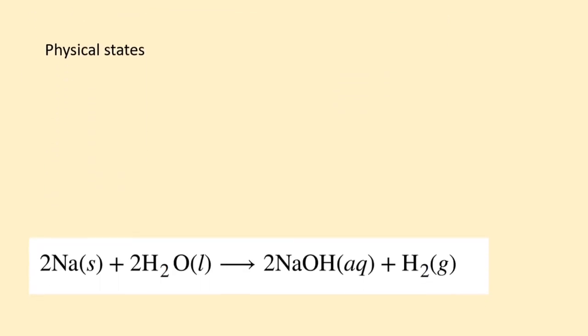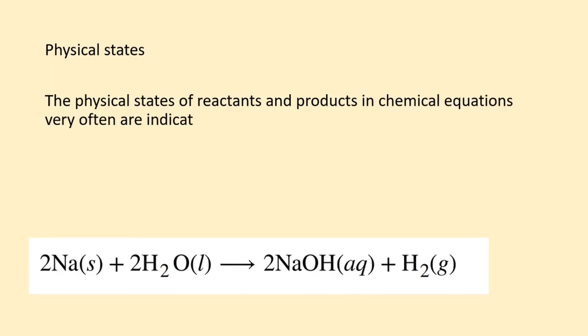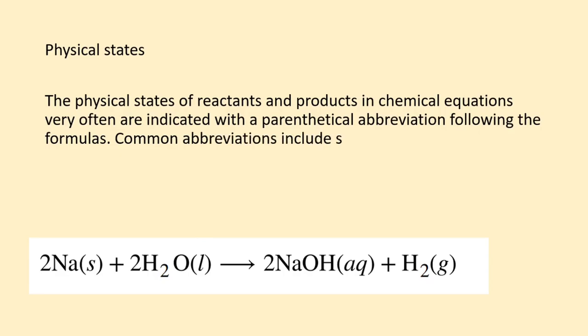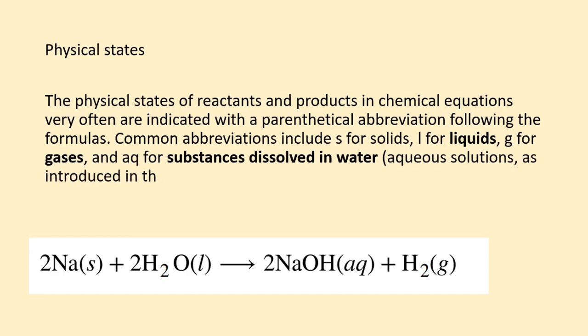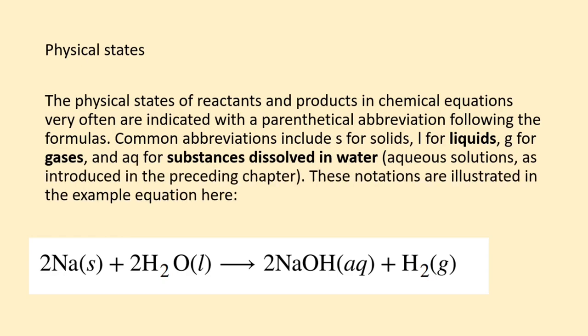The physical states of reactants and products in chemical equations very often are indicated with a parenthetical abbreviation following the formulas. Common abbreviations include s for solids, l for liquids, g for gases, and aq for substances dissolved in water (aqueous solutions), as introduced in the preceding chapter. These notations are illustrated in the example equation here.